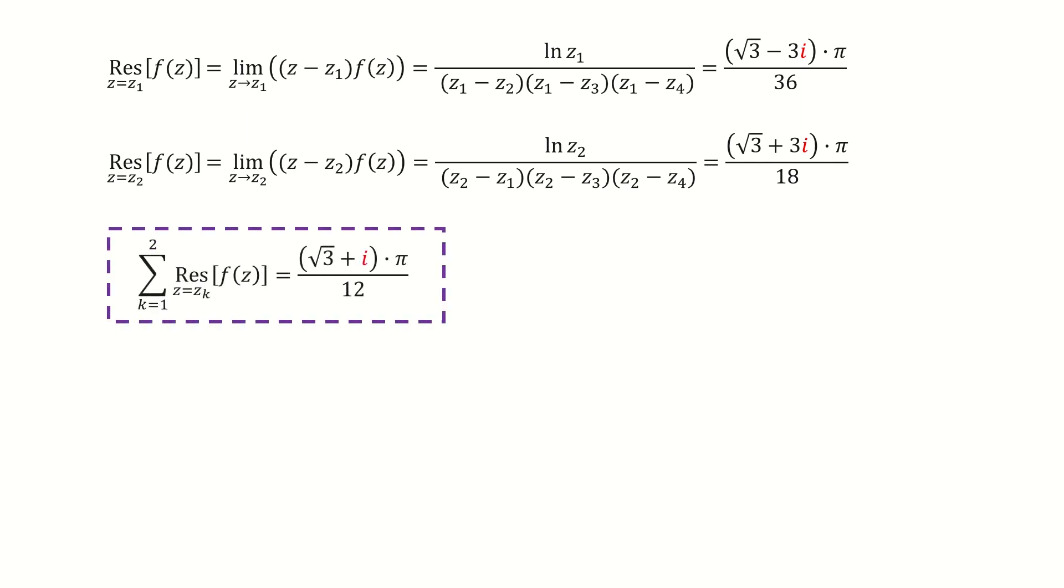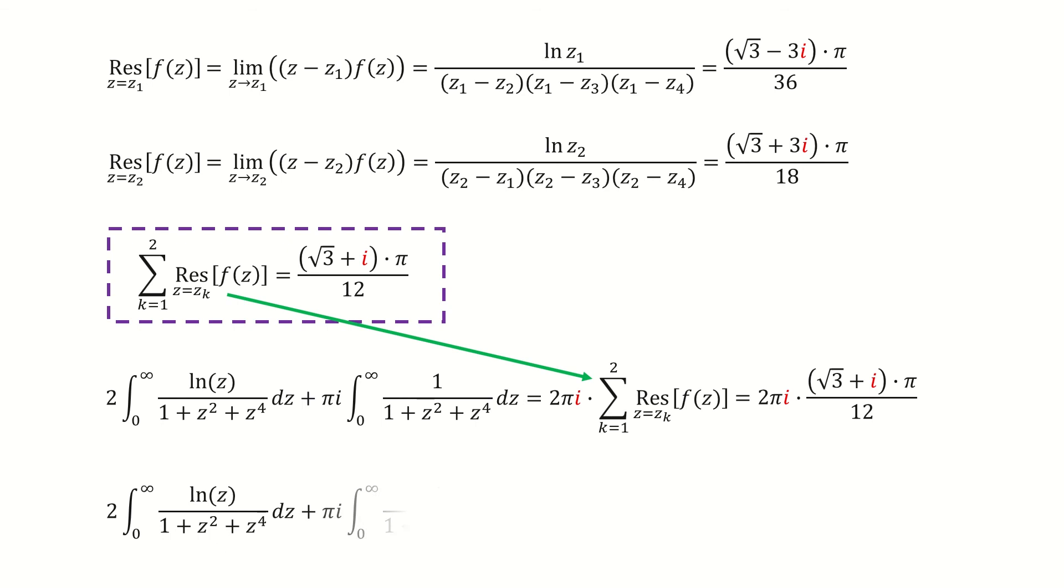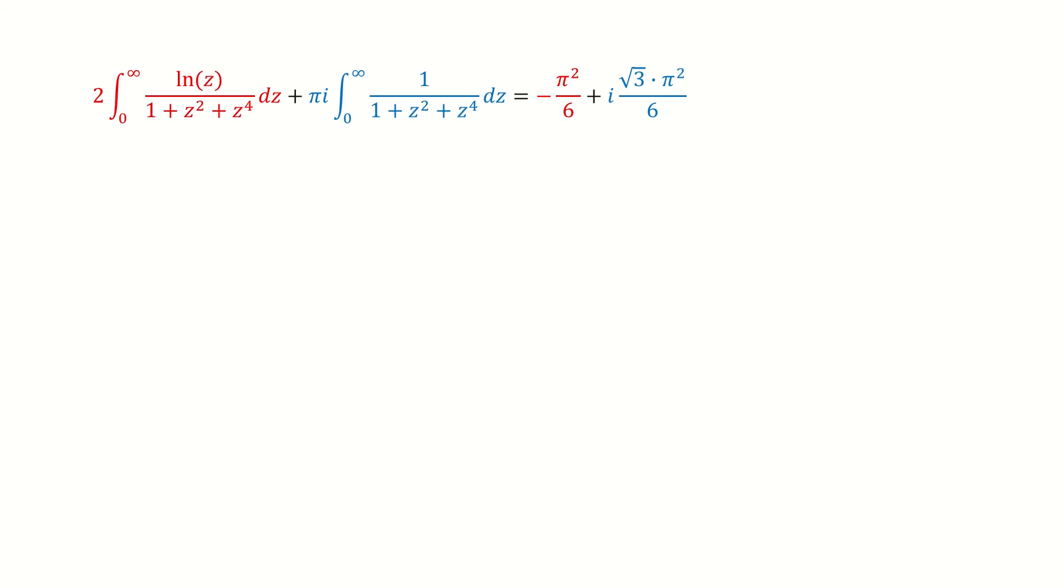Then we just take the sum for these two residues, so we got here. Recall the equation we just derived in the previous slide. Next, we just plug in the result for the sum of these two residues. Then we simplify the right hand side.